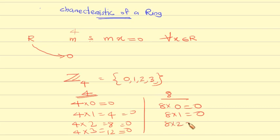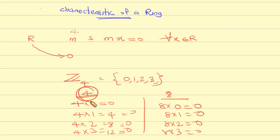In Z4: 8 into 1 equals 8, 8 into 2 mod 4 equals 0, 8 into 3 mod 4 equals 0. This property is satisfied. 4 is the least positive integer satisfying the property. Therefore Z4 has characteristic 4.